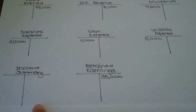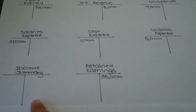Though they did not give you the income summary account as one of the accounts listed, you know that you are going to need that account since we are doing the closing journal entries. Remember, the income summary account is a temporary account and is only used during the closing process, so I went ahead and set up a T account since we will be needing that.